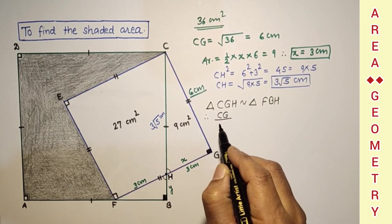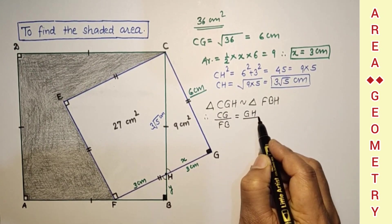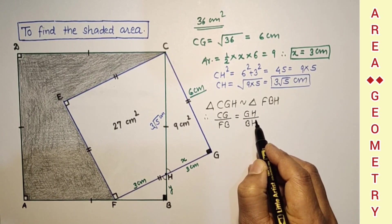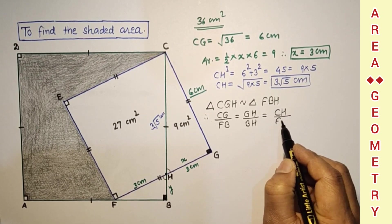CG over FB is equal to GH over BH and that is equal to CH over FH.